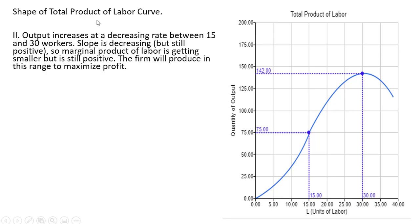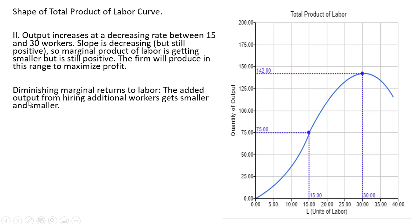In the middle section, output increases at a decreasing rate between 15 and 30 workers. The slope is decreasing but still positive — output is going up, but in smaller and smaller increments. The marginal product of labor is getting smaller with each additional worker hired, yet it's not negative, it's still positive. The firm will produce in this range to maximize profit. So between 15 and 30 workers, we have diminishing marginal returns to labor — the added output from hiring an additional worker gets smaller and smaller.